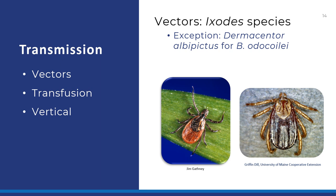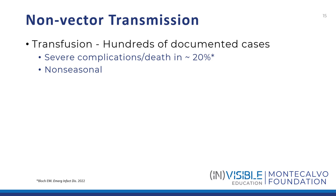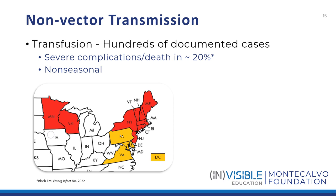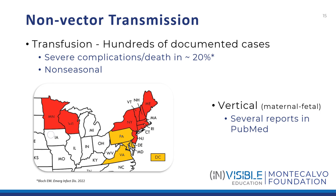Transmission is primarily via tick bite. Most human pathogenic species are transmitted by Ixodes ticks, pictured on the left. The exception is Babesia otocolae, which is transmitted by Dermacentor albopictus, seen on the right. Hundreds of transfusion-transmitted cases have been documented, and the mortality is significant. Given that, and knowing the regionality of blood banking, in 2019 the FDA recommended screening blood donations in the 10 higher risk states, plus Delaware, Maryland, Pennsylvania, Virginia, and the District of Columbia. Additionally, cases of vertical transmission have also been documented.